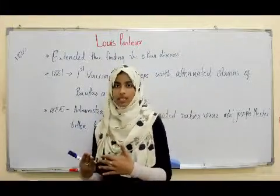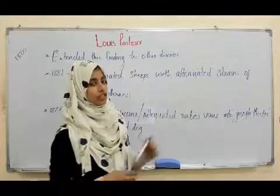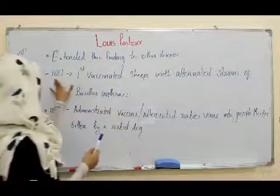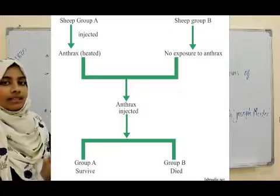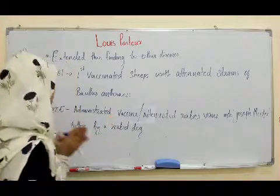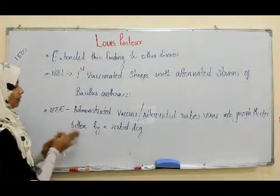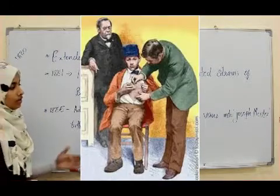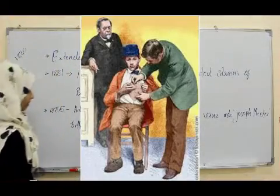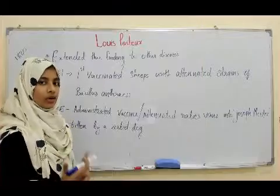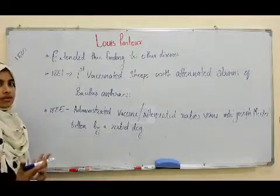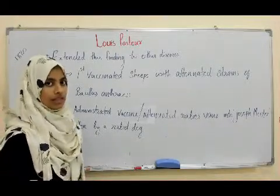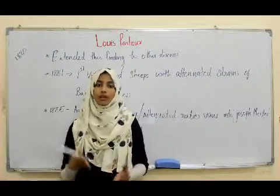After the success of vaccination for chicken cholera, Pasteur extended his work to other diseases such as anthrax and rabies. In 1881, he first vaccinated a group of sheep and the story was also successful. Then in 1885, he first administered the attenuated rabies virus vaccine to a human — Joseph Meister — who had been bitten by a rabid dog. He was safe; the rabies virus could not produce disease in him because of the vaccination.